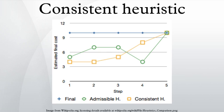However, an admissible heuristic can be made into a consistent heuristic through the following adjustment, known as the pathmax equation.